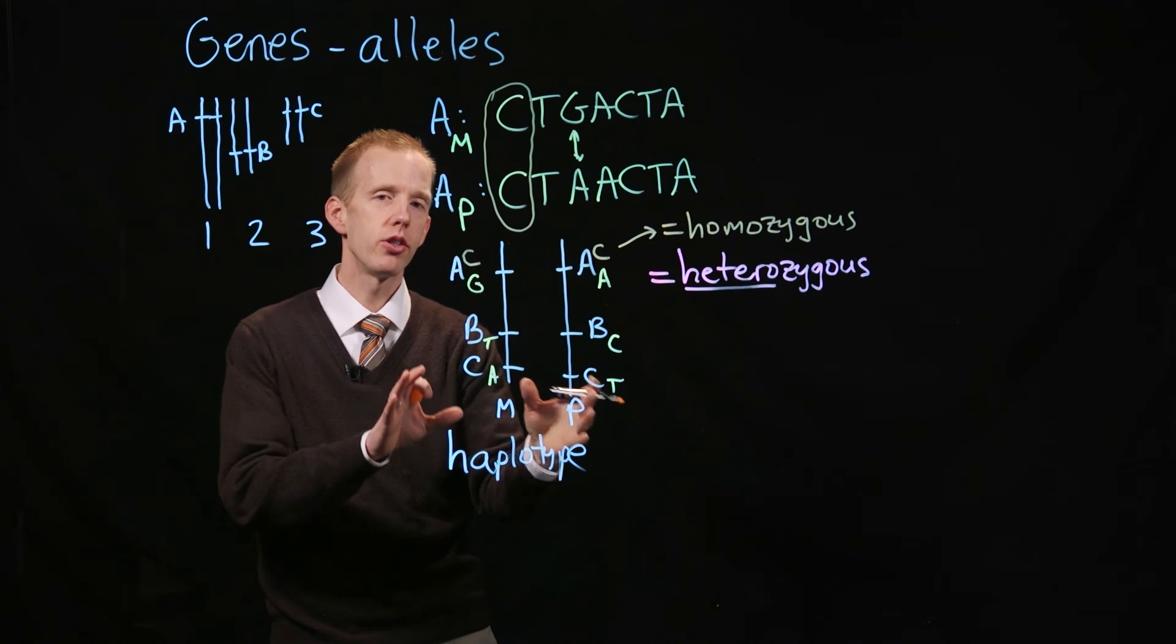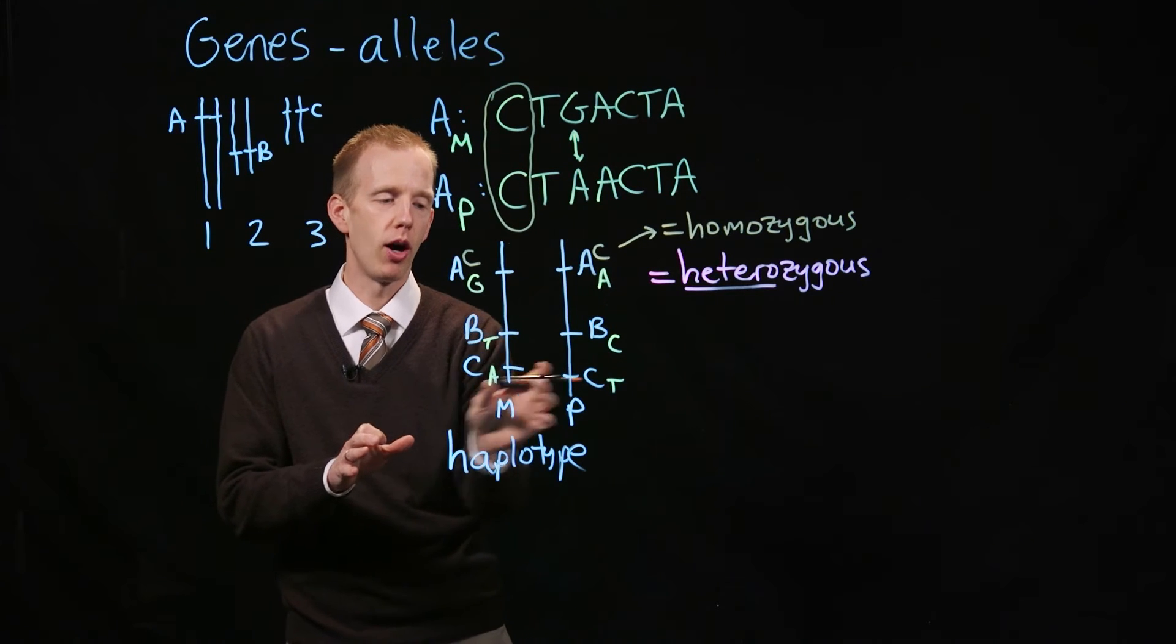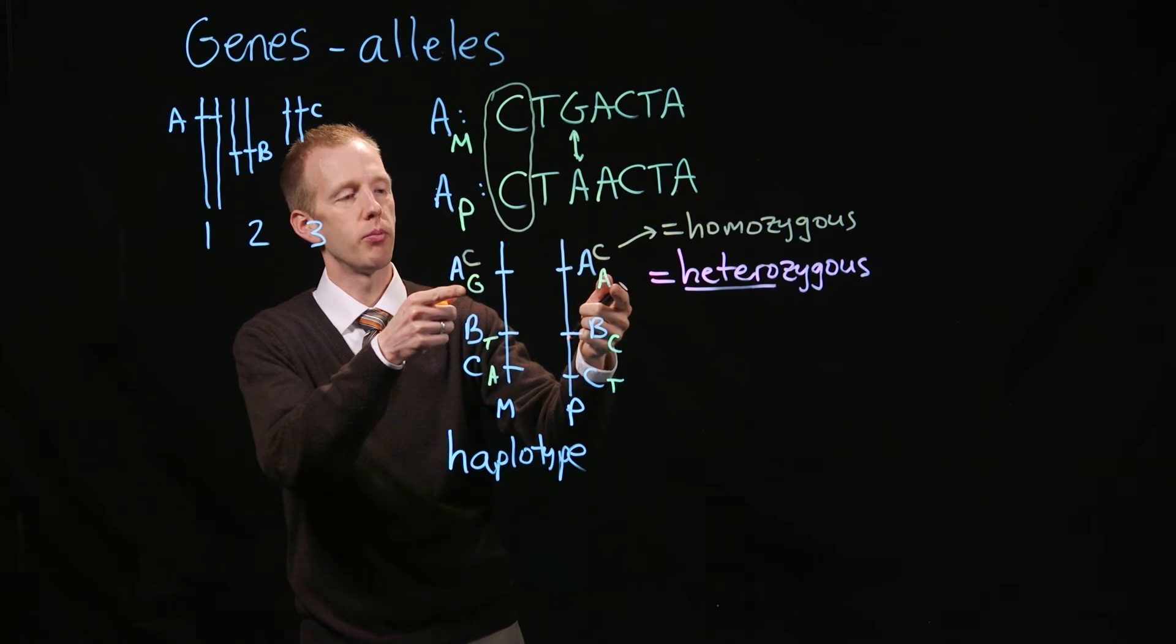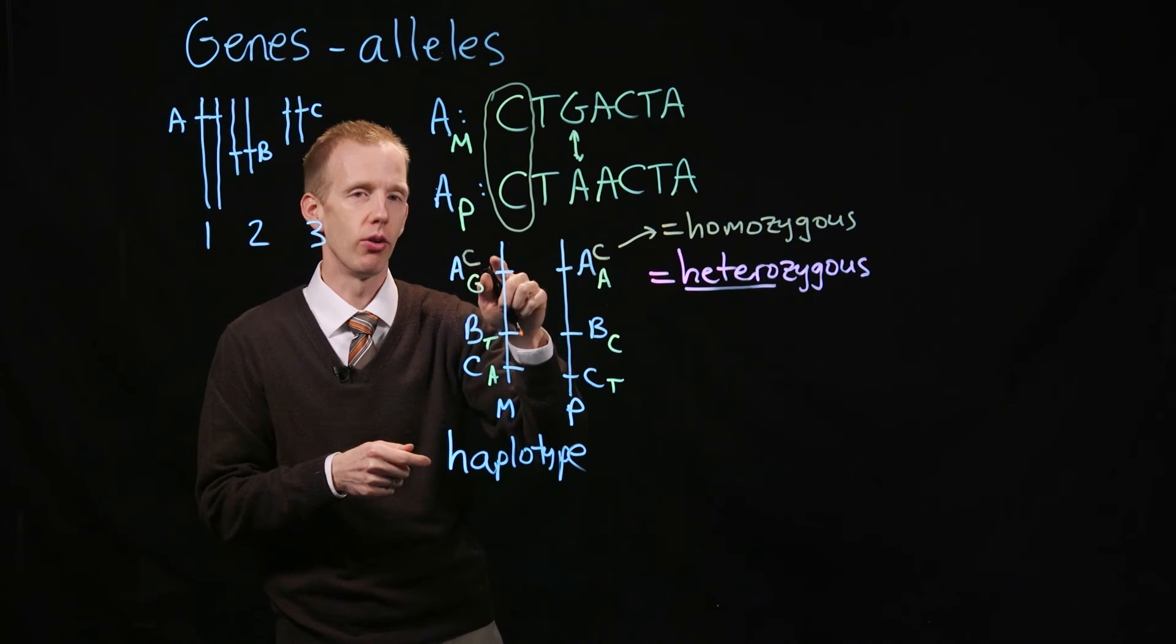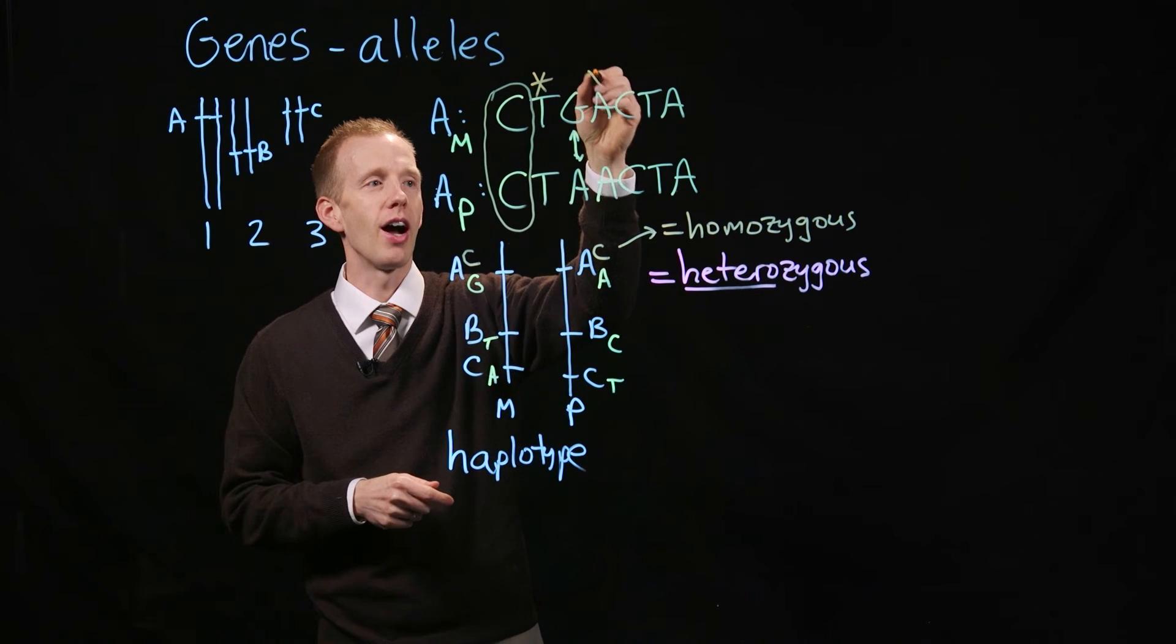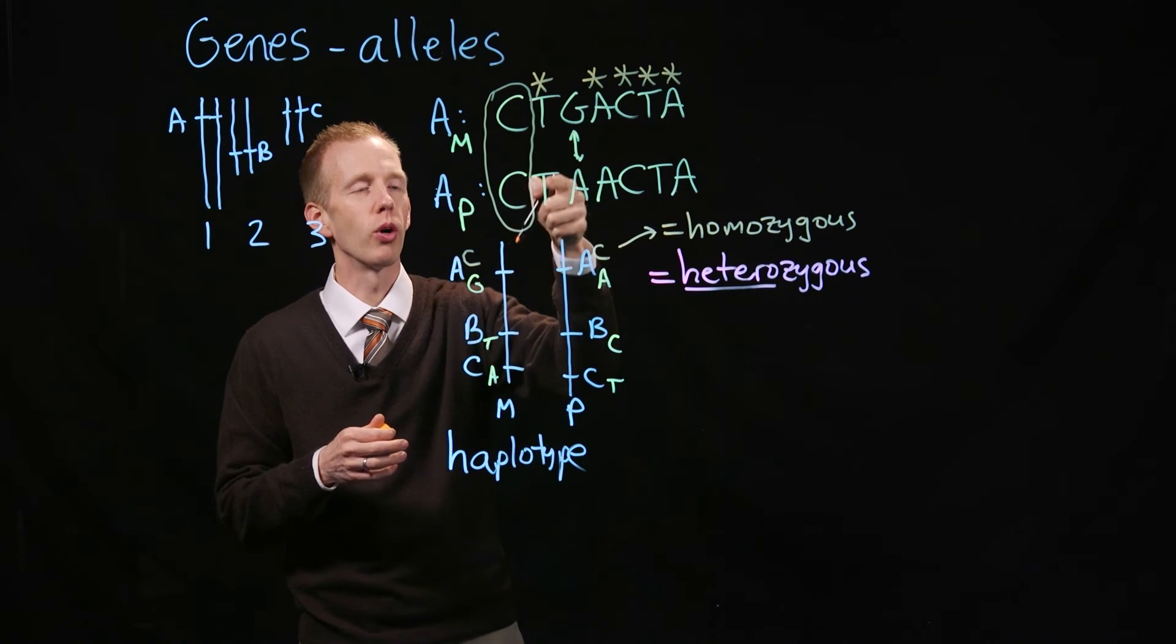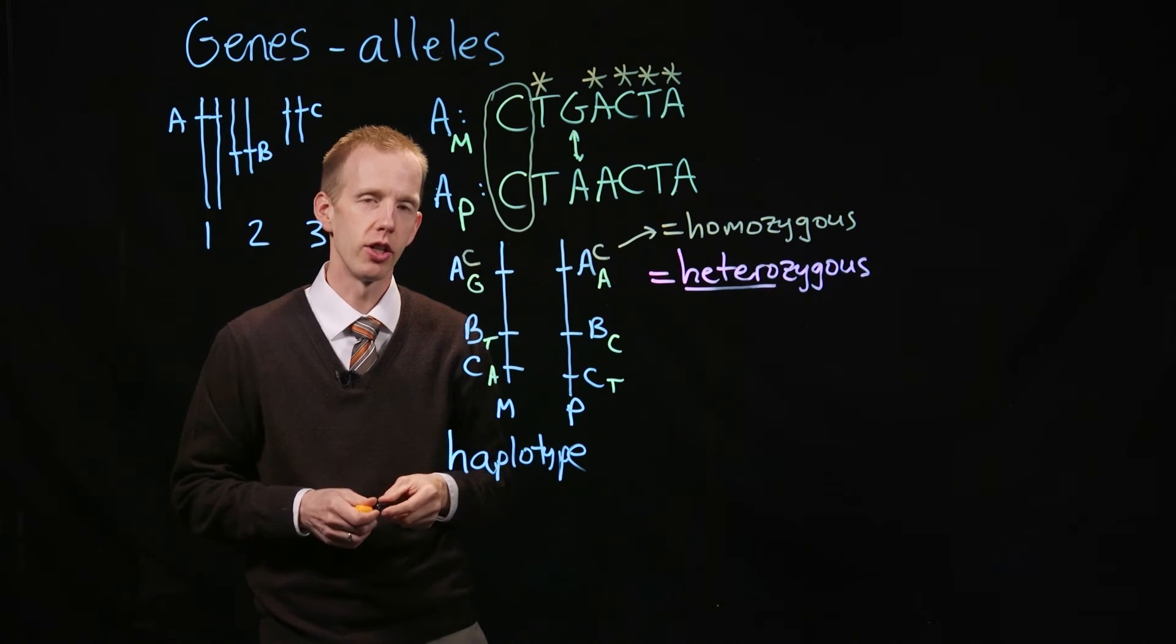The individual that these two chromosomes came from, one chromosome that this individual inherited from their mom, and one chromosome they inherited from their dad, they're heterozygous for a SNP, single nucleotide polymorphism, here in gene A. There's a G and an A, different, heterozygous. Most of the other nucleotides are identical between the two chromosomes. I'm putting asterisks above them here. Those are all homozygous. Regardless of which chromosome you look at, you have the same nucleotide at that position in the gene.